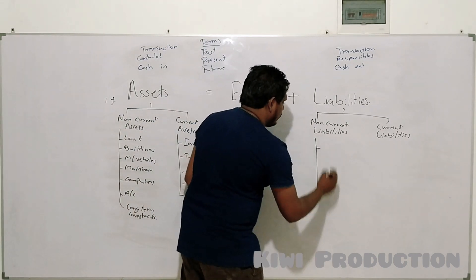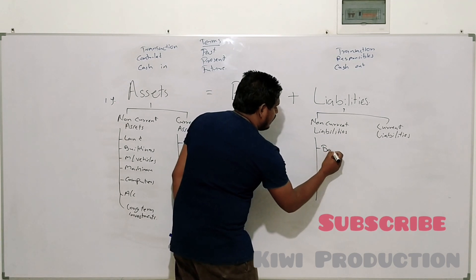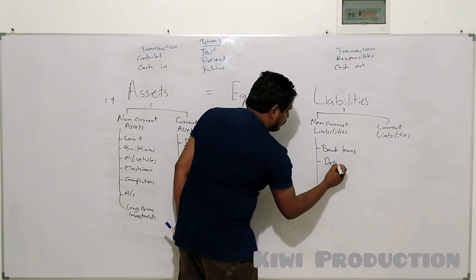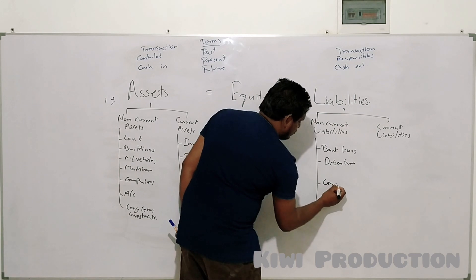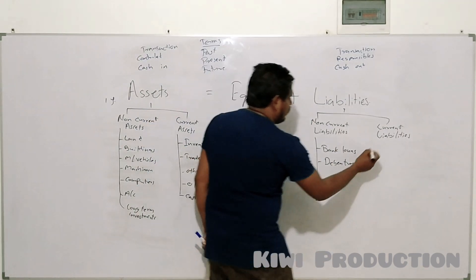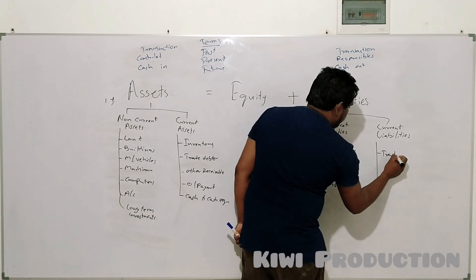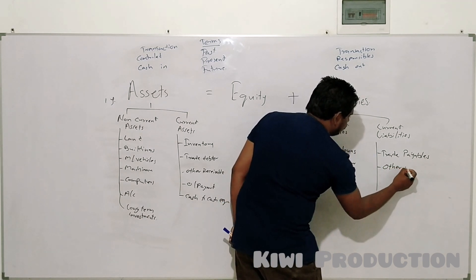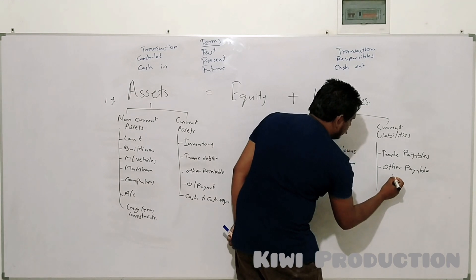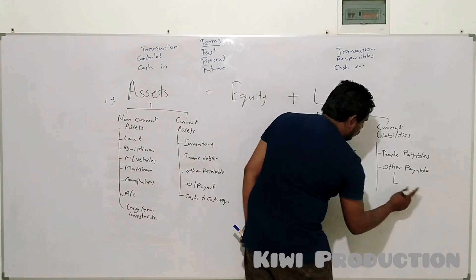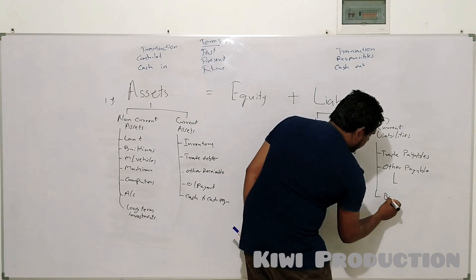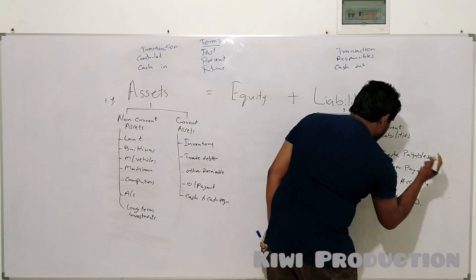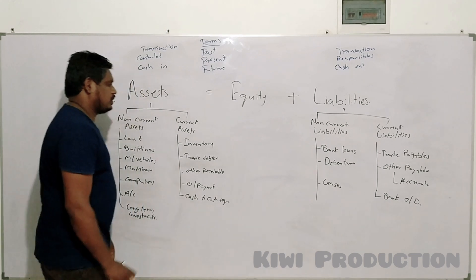Under non-current liabilities you can identify bank loans. Current liabilities include bank loans, debentures, leases, trade payables, other payables, bank overdraft, and accruals.